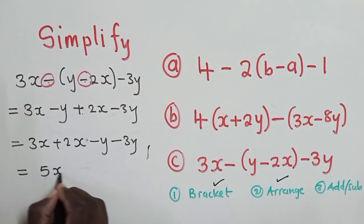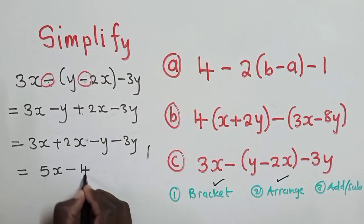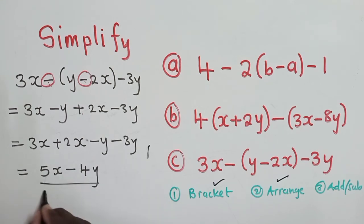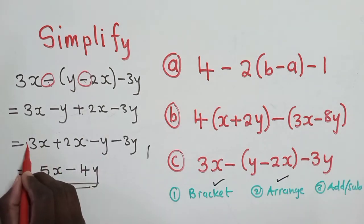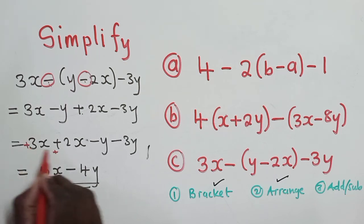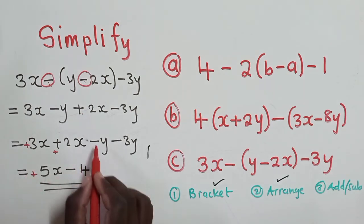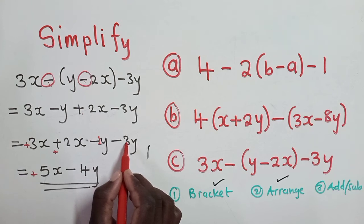So we're going to get 5x minus 4y. So you may be wondering how have I gotten a negative 4 here. So if you can see, here we have a positive and here a positive. So we added 3 plus 2. It gave us 5. And we got a positive sign.